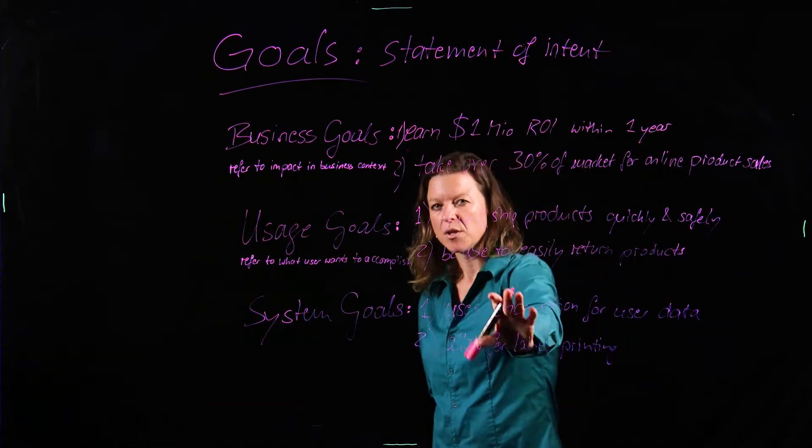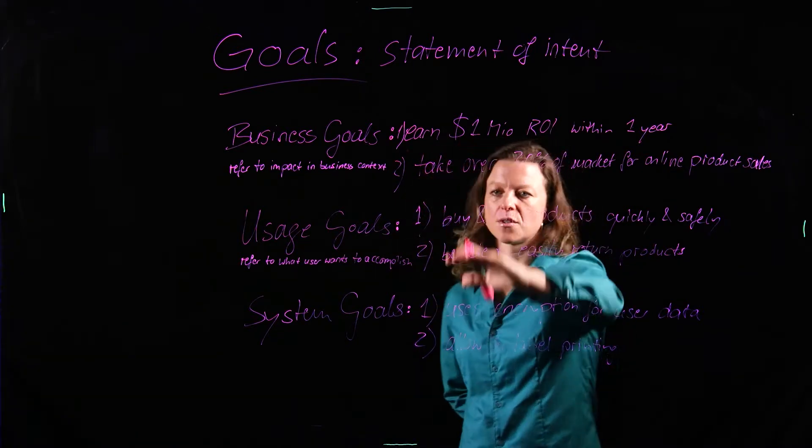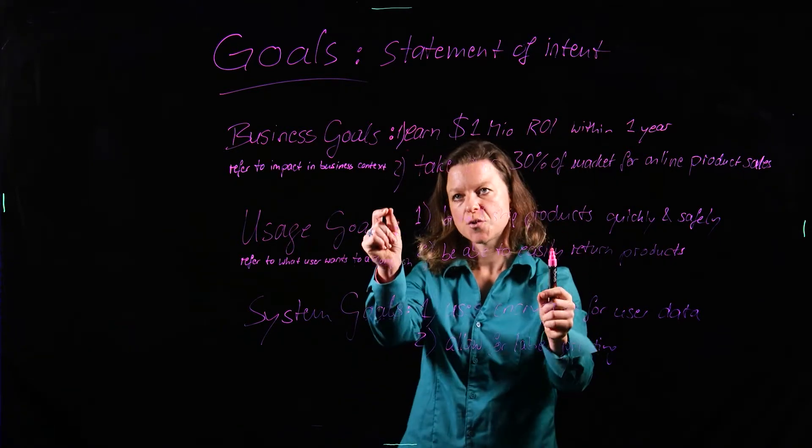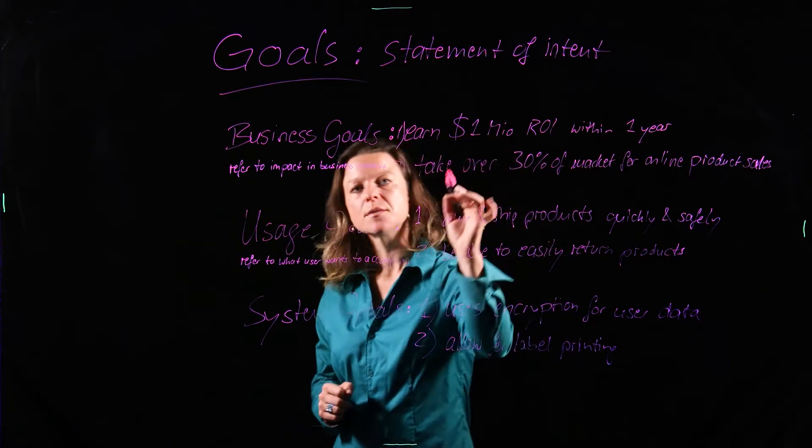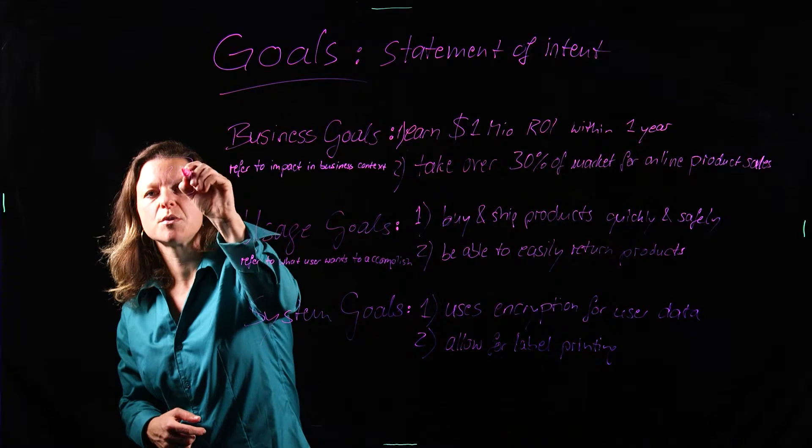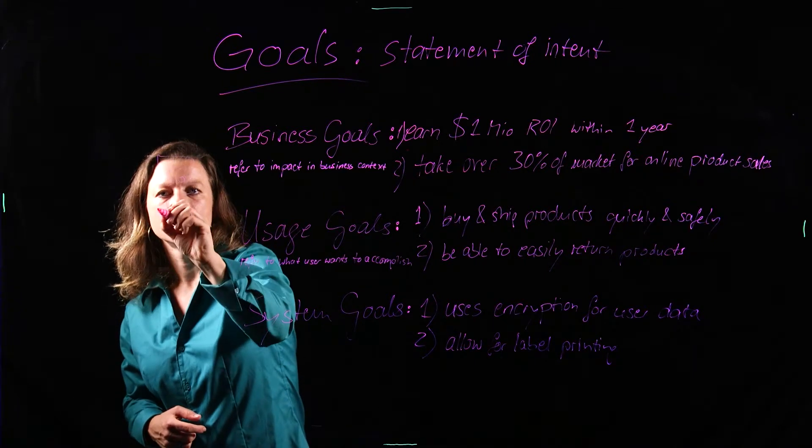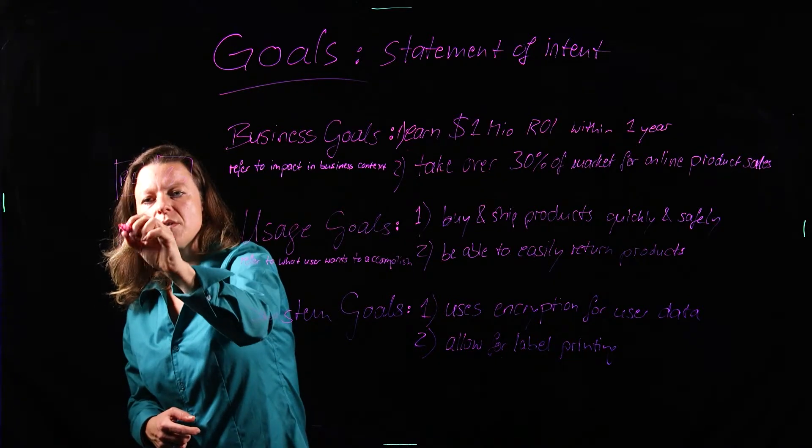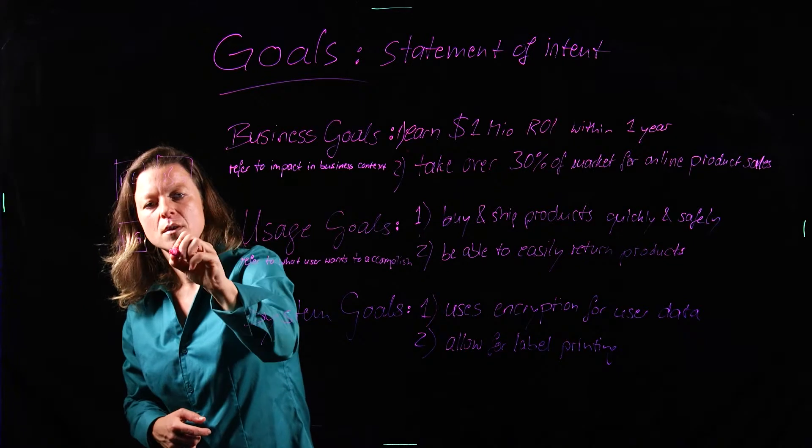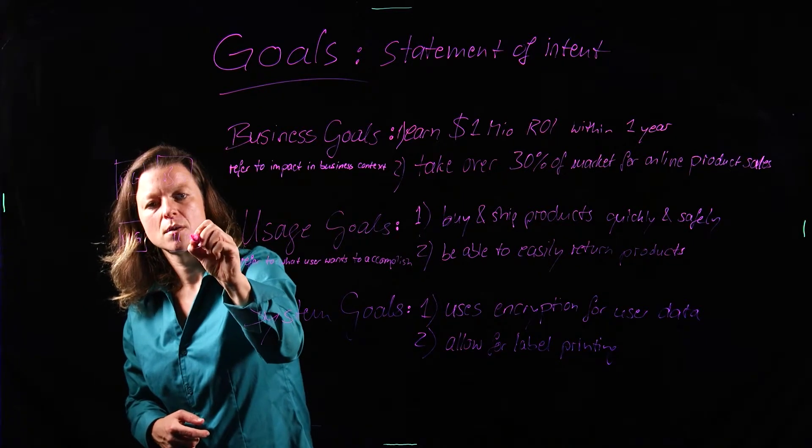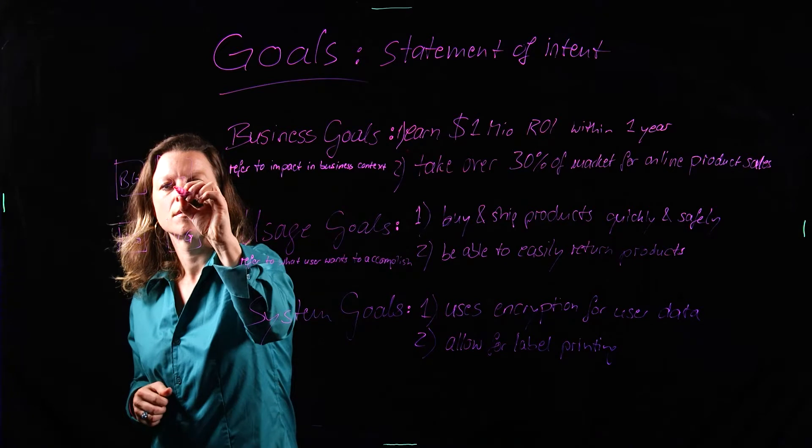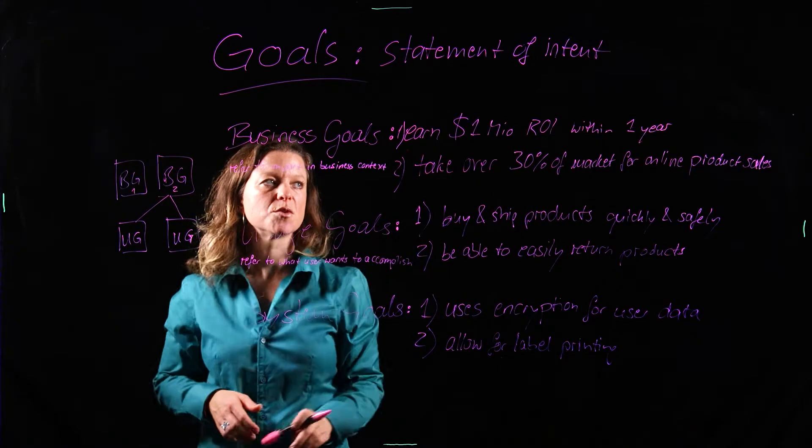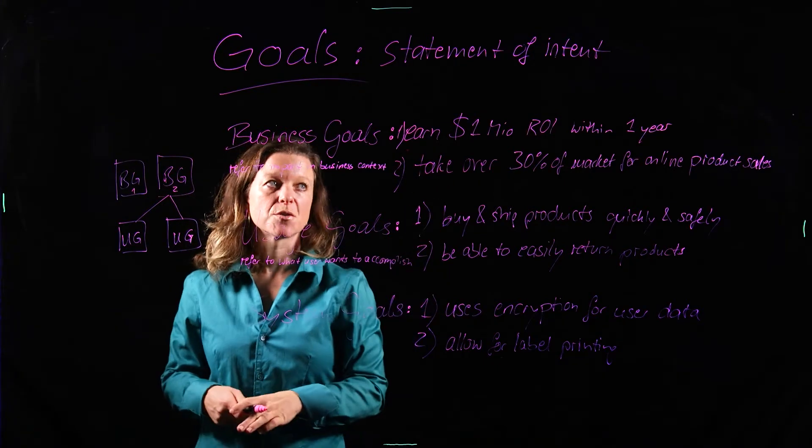And where we go after defining the goals on the three levels is into an analysis of what is the relationship between those goals. So we will start by making a hierarchy. So up here we have a business goal. And then, well in our case we had two. And then here we have the usage goals. One, two. So both of those are derived from their business goal number two. We want to take over the market for online product sales.